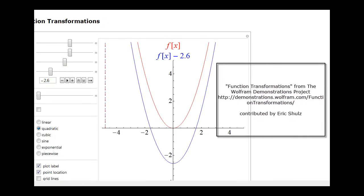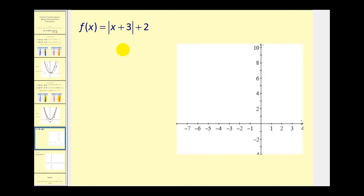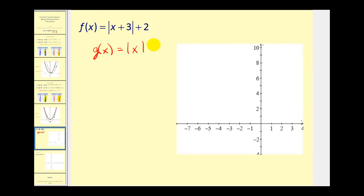Let's take a look at some examples. We want to use what we just learned to accurately and quickly graph F of X equals the absolute value of the quantity X plus 3, plus 2. The first thing we need to do is recognize what the parent function is — in this case it would be the absolute value of X. Let's call G of X equals absolute value of X and graph this for reference.